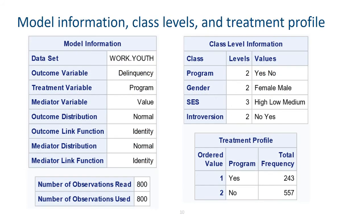As you can see from the first set of output, the program variable uses reverse alphabetical order for the levels. Proc causal med assumes that the first ordered level — here with the 'yes' value — represents the treatment condition. In the model information table, because both the outcome and mediator variables are continuous, identity links are used, meaning that linear regression models are used for both variables. In the treatment profile table, you can see that there were 243 subjects in the treatment condition and 557 subjects in the control condition.